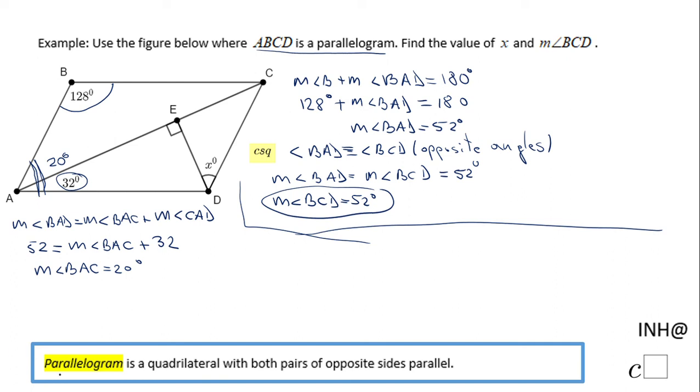But now this angle that is 20 degrees is congruent to this angle. They are alternate interior angles. Remember this is a parallelogram, so these two segments, these two lines are parallel lines. So I'm going to write this statement here also. I'm going to say AB parallel to DC, so that means angle BAC is congruent to angle DCA.